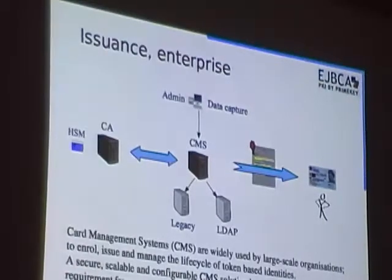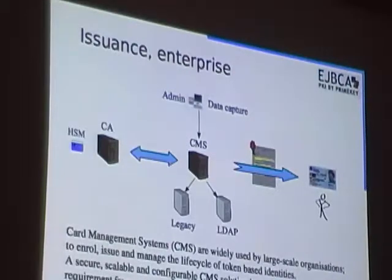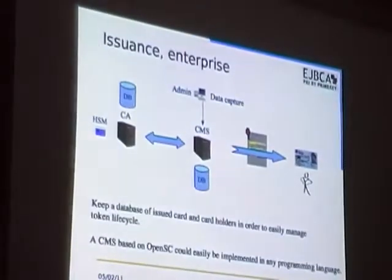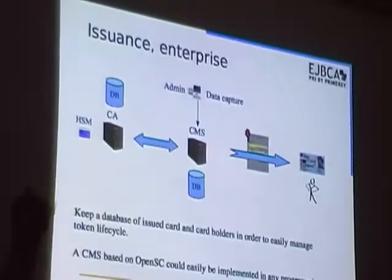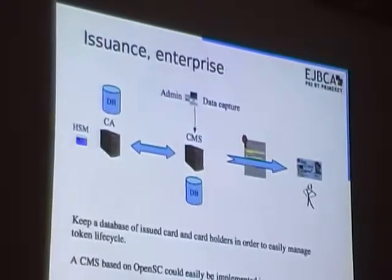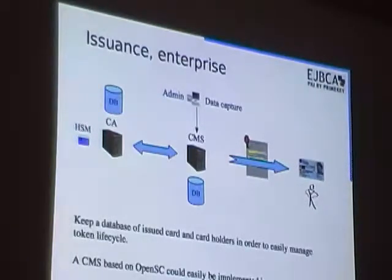The CMS can integrate with LDAP and legacy systems when you provision a user with a smart card, and also distribute throughout the organization to all the relying party systems that want to receive this ID. And if you have systems like this, you usually have several databases. The certificate authority has a database with certificates to manage them, to be able to revoke certificates and issue revocation lists. The card management system also has a database with ID numbers of the cards, so you can keep track of which person got which smart card.